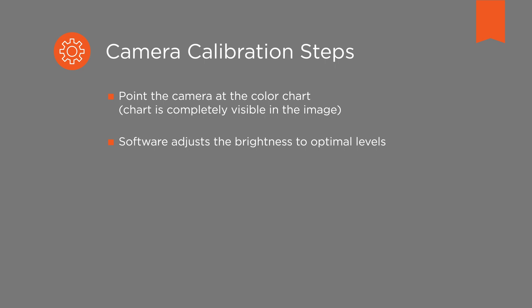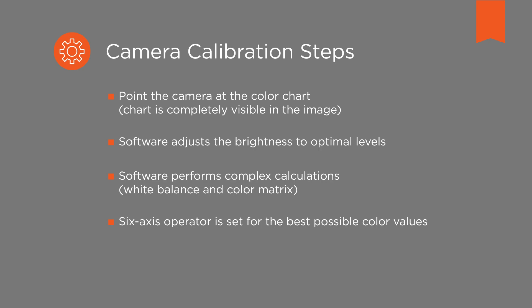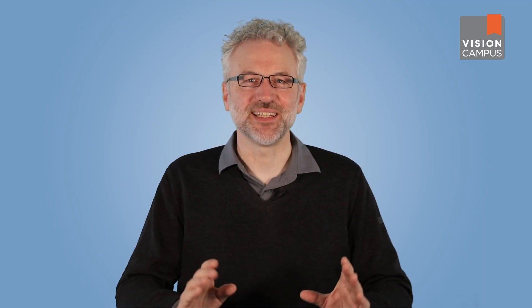This is extremely important for color calibration. In the next step, the software performs complex calculations such as white balance and optimizing the color matrix. As a finishing touch, the six-axis operator is set for the best possible color values. As a result, you get the ideal light source preset for the present light conditions. Pretty simple, right?